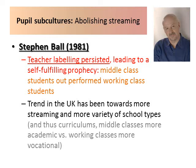Interestingly, the trend in the UK has been towards more streaming — it is actually a very popular policy. Many parents who believe their children are hard-working tend to think streaming is a good thing, particularly when their children are in the top streams, whereas parents of children in lower streams often feel they have no power to challenge it. We also see an increase in the variety of school types and therefore curriculums, where middle classes often take on more academic studies whilst working classes take on more vocational or hands-on manual studies.